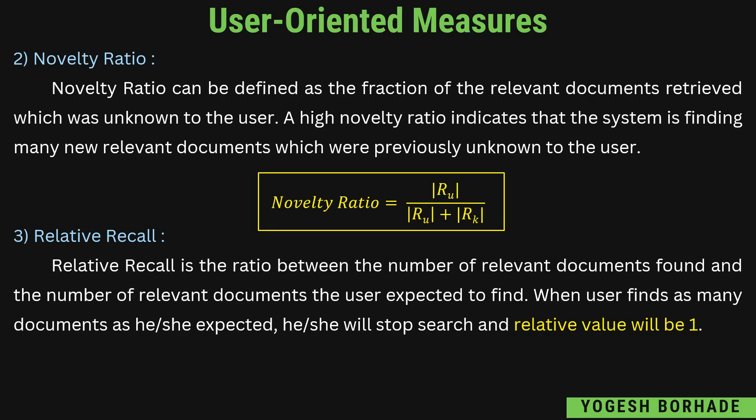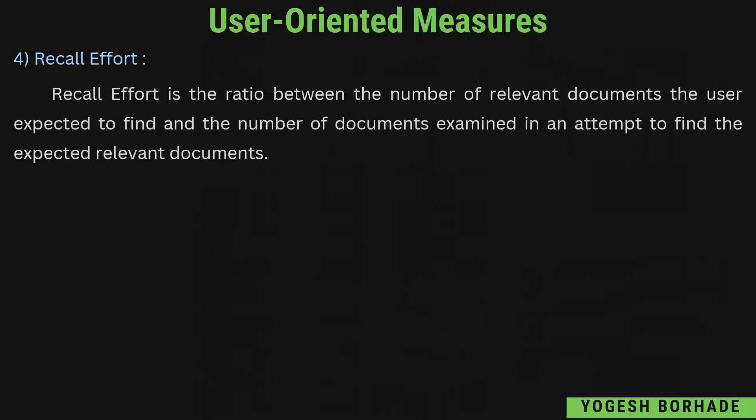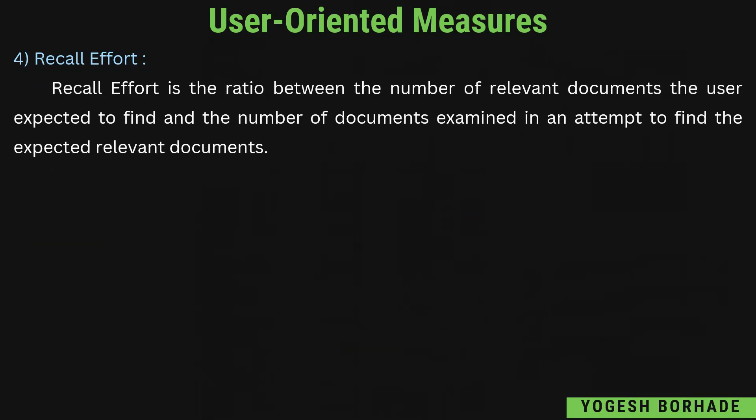Relative recall — यह ratio है between the number of relevant documents found and the number of relevant documents the user expected to find। मतलब जो relevant documents found हैं उनका ratio और जो user find करना चाहता है उसका। जब user को सभी documents जो वो देखना चाहता है वो मिल जाएं तो searching stop करेगा और उस case में numerator और denominator equal हो जाएंगे, जिससे relative recall की value 1 आएगी। इसका formula है mod of R(k) plus mod of R(u) divided by mod of capital U। Recall effort का formula है mod of capital U divided by mod of capital A, which is your answer set।